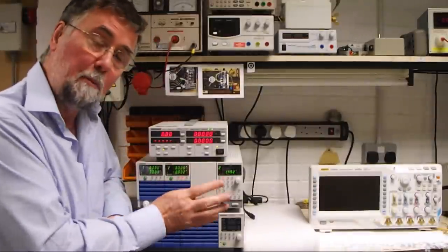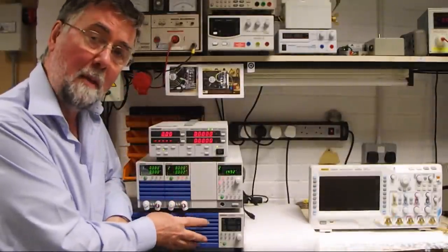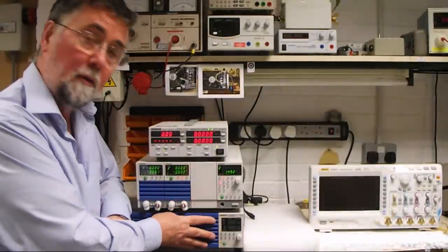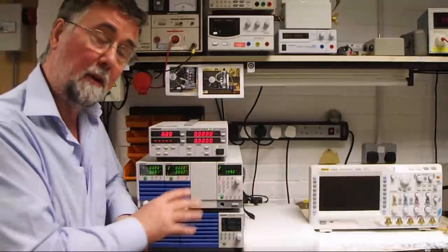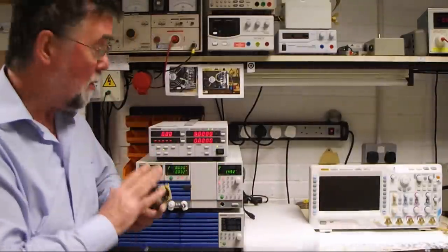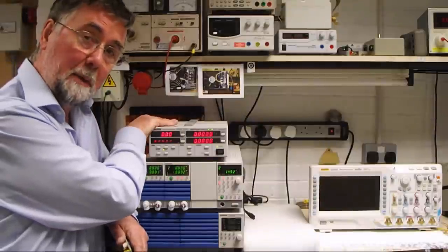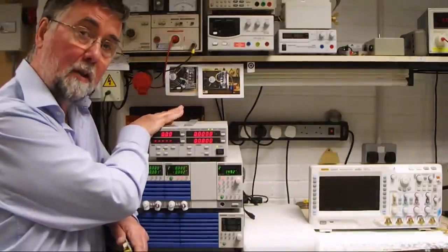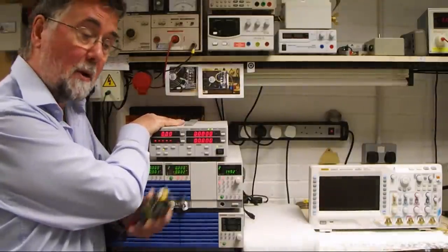To do this test we're going to use a Kikasui PCR2000M AC source that'll generate the mains to drive this. It's variable frequency, variable voltage. We're going to measure how much power this uses using this Kikasui digital power meter, KPM1000. That'll tell us precisely how much power is going in.